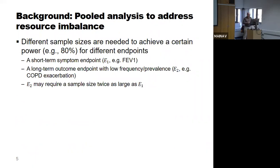However, there is a problem: sometimes we need very different sample sizes to achieve a certain power, say 80%, for different endpoints. For example, in respiratory studies, a short-term symptomatic endpoint like FEV1 — the forced expiratory volume in one second, a lung parameter — could require a very different sample size compared to a hard clinical endpoint such as exacerbations in COPD studies.